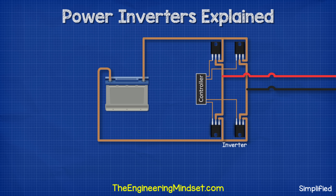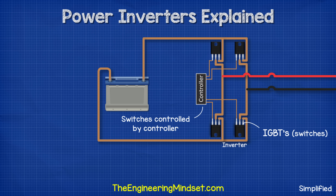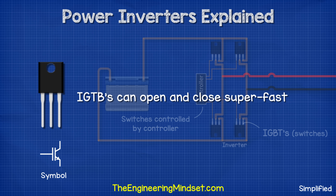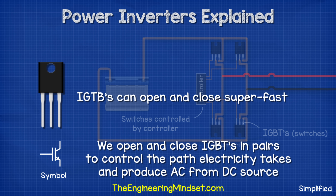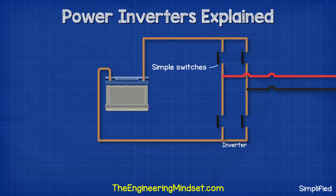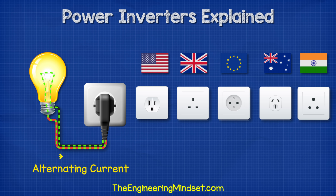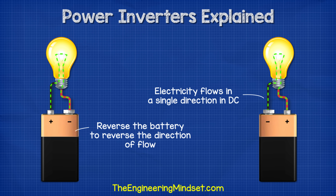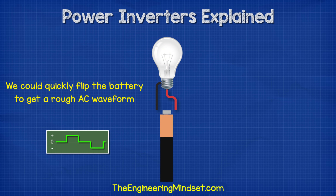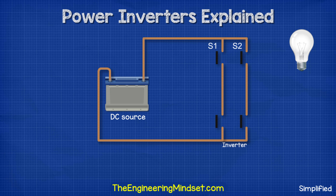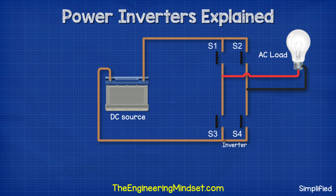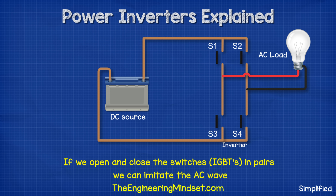The inverter consists of a number of electronic switches known as IGBTs. The opening and closing of the switches is controlled by a controller. These can open and close super fast in pairs to control the flow of electricity. By controlling the path which the electricity takes and how long it flows in the different paths, we can produce AC electricity from the DC source. I'm going to animate these using some simple switches to make them easier to visualize. Remember, AC is where the current reverses direction. We can reverse the direction of current by reversing the battery, but an easier way would be to connect four switches or IGBTs across our load, such as a lamp. If we open and close these in pairs, then we can produce AC electricity.